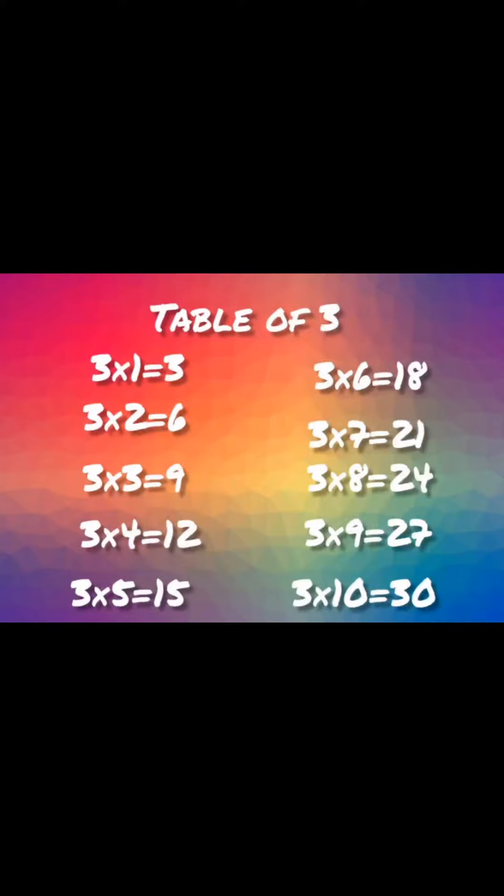Three ones are three. Three twos are six. Three threes are nine. Three fours are twelve. Three fives are fifteen.